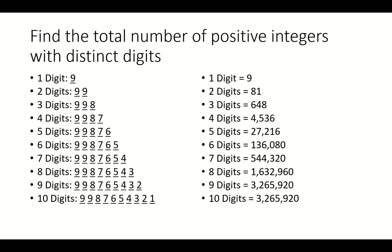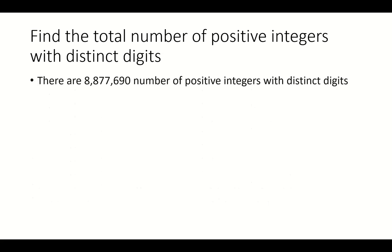So these are all the digits, and now what we have to do is just add it up. So if we add it up, there's 8,877,690 positive integers with distinct digits.